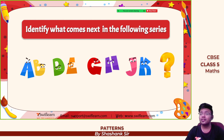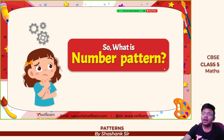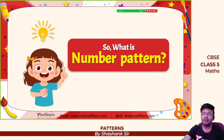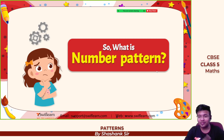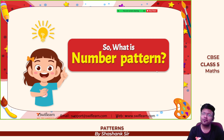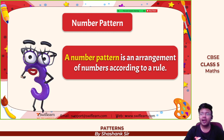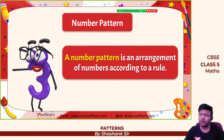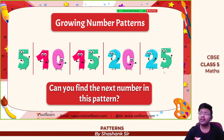A student asks: 'Sir, we are in fifth standard, why are you teaching us A, B, C, D?' — I am teaching you patterns. So the next type of pattern is the number pattern. A number pattern is an arrangement of numbers according to a rule. Now see this growing number pattern: 5, 10, 15, 20, 25 — can you find the next number?